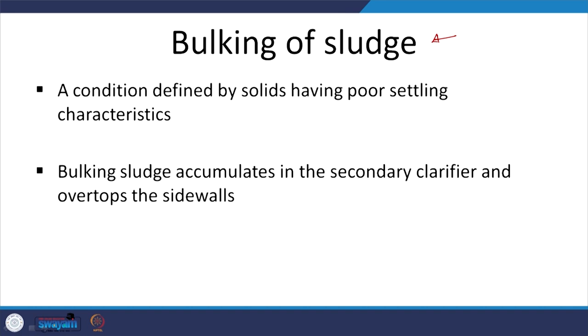Sludge bulking is one common factor that ruins many Indian treatment plants and quite a lot of plants worldwide. In the aeration tank, microbes degrade the waste; when they go to the secondary settling tank or clarifier, you need floc-forming bacteria that settle down. Depending on F/M and theta_c, you may instead have sludge that does not settle — bulking of sludge.